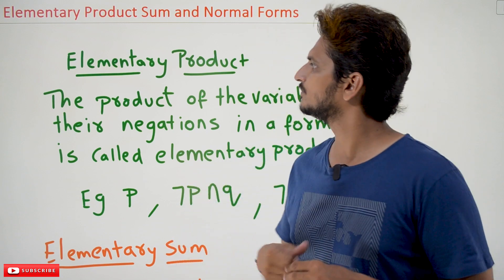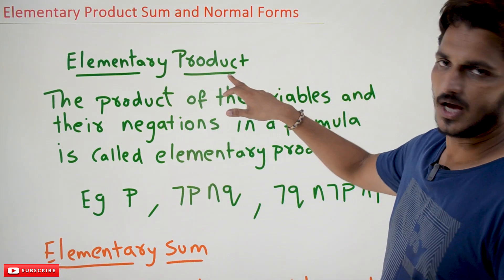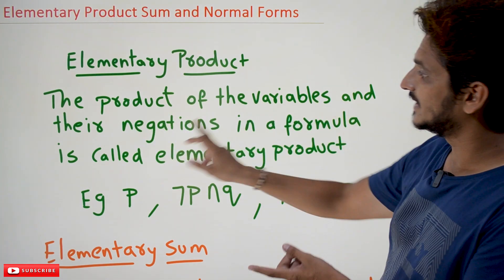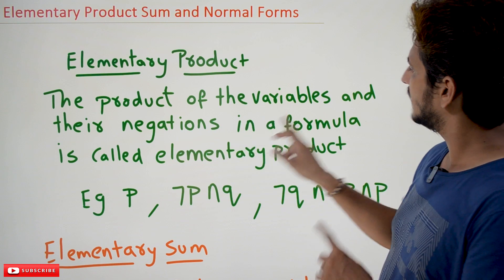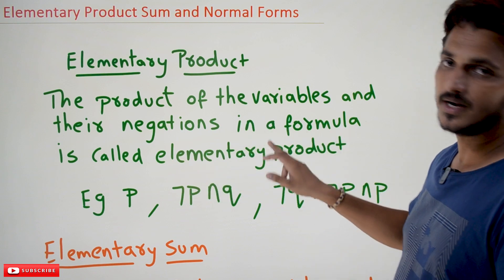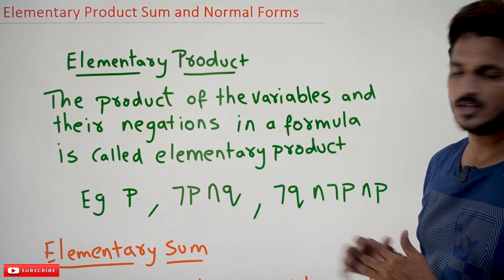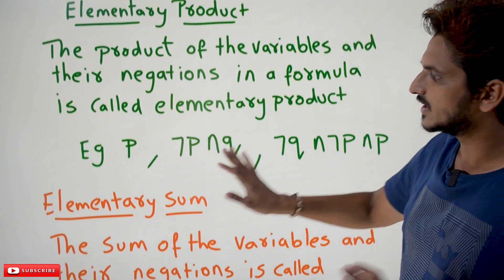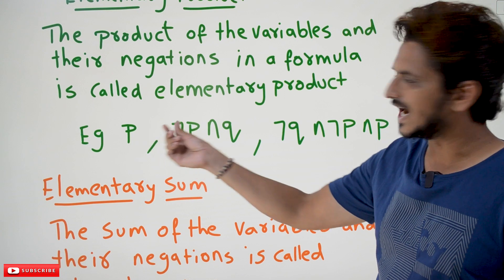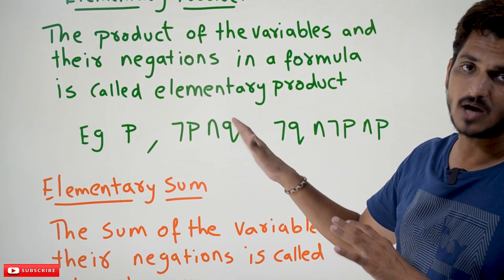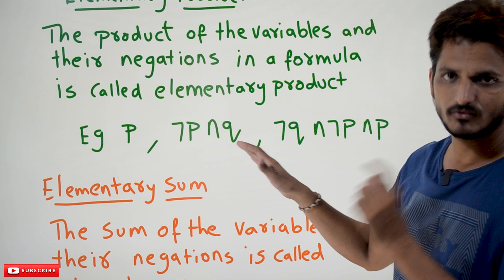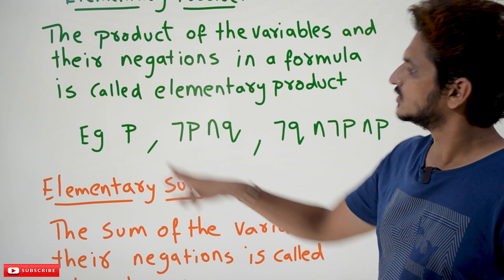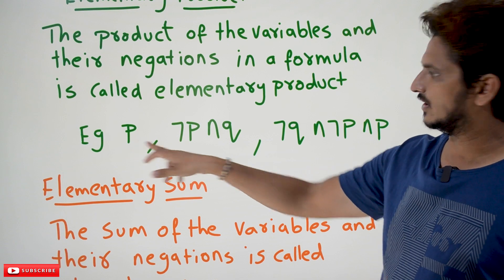Coming to today's class: elementary product. The product of the variables and their negations in a formula is called elementary product. Here product means conjunction. So any formula that contains variables and their negations with the conjunction connective, we call it as elementary product.